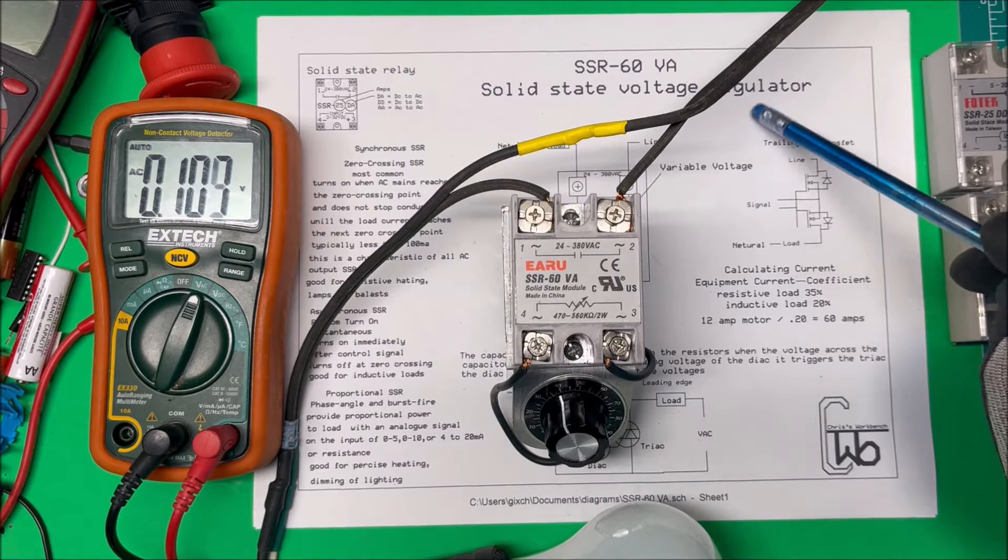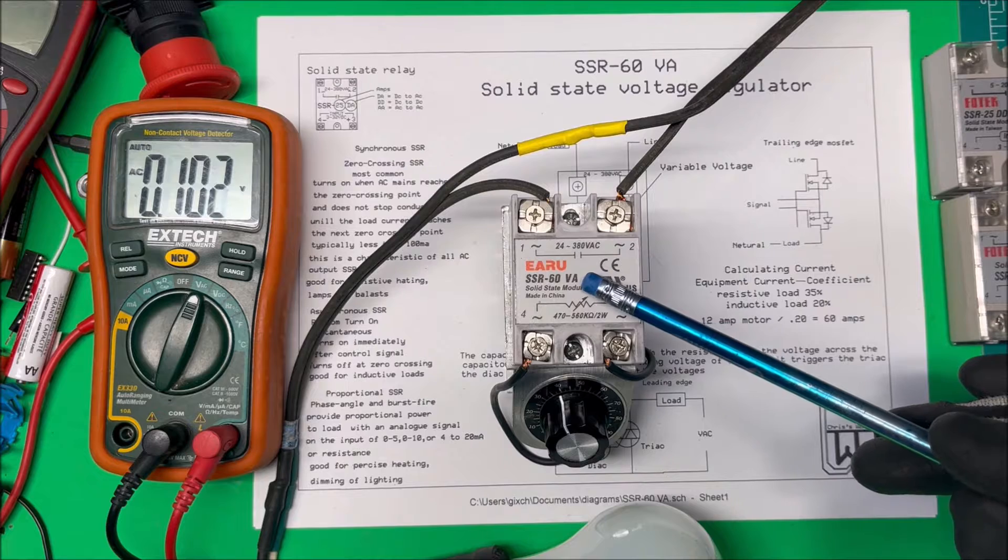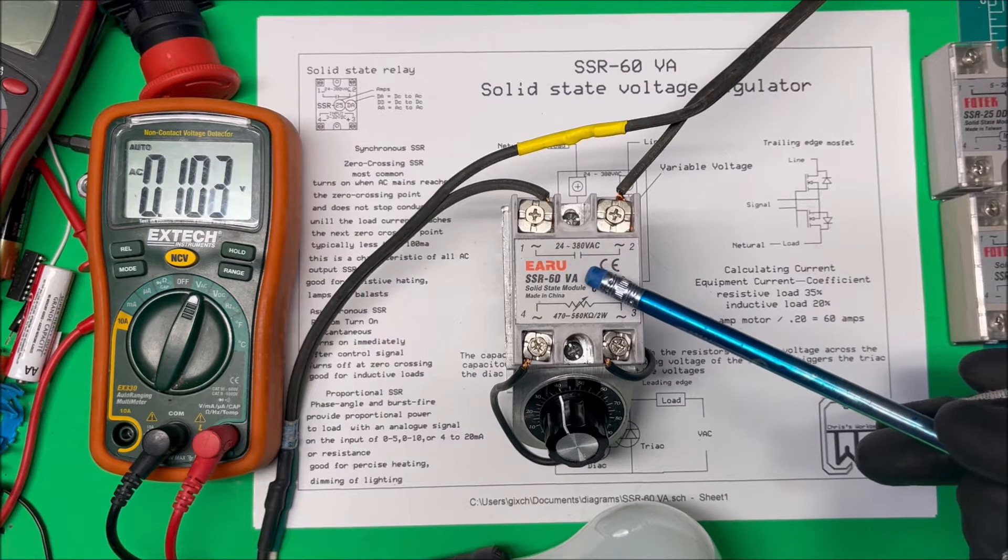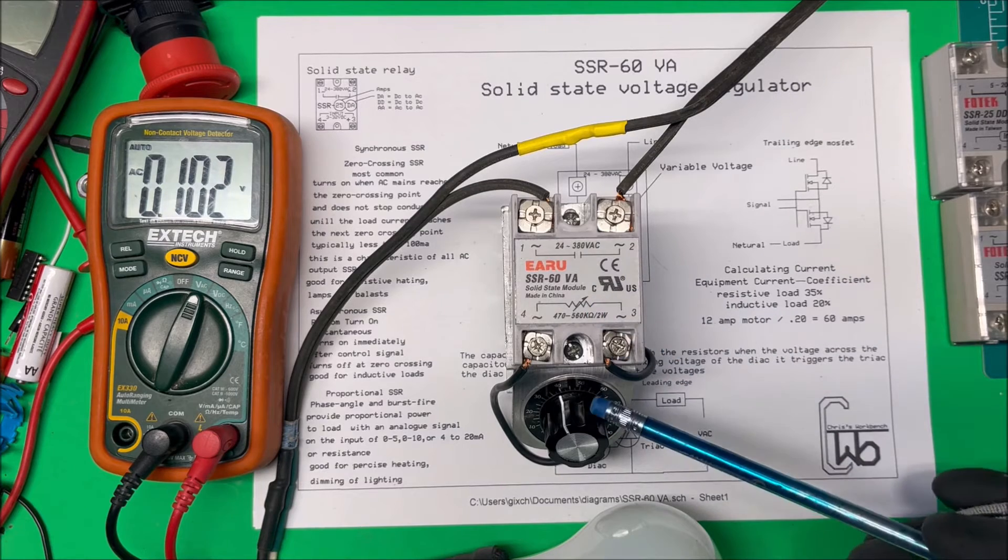Let's take a look at a solid-state voltage regulator. I've got one here, this is an SSR-60 VA, and the VA stands for variable AC output. We vary the output with a potentiometer down here.